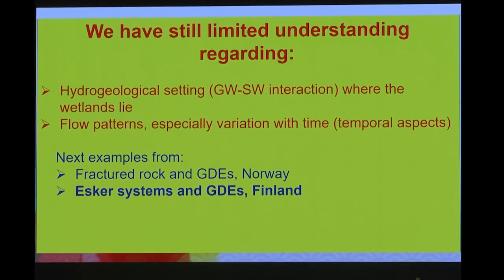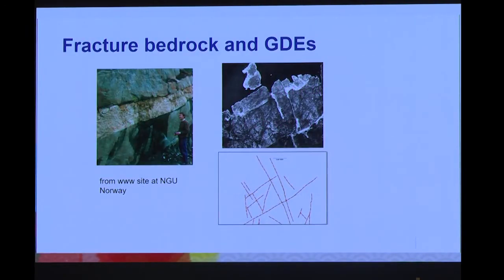Next I will show examples I mentioned earlier — first, a few slides on fracture rock systems that I worked on, and later on the esker systems. As you know, fracture rock can conduct water. Looking from air photographs, you can also see zones with fractures, mapped here — this is a picture from the Norwegian Geological Survey. Quite many times we find ecosystems in these zones — peatlands, small lakes, and groundwater-dependent ecosystems are very often found in fracture zones.